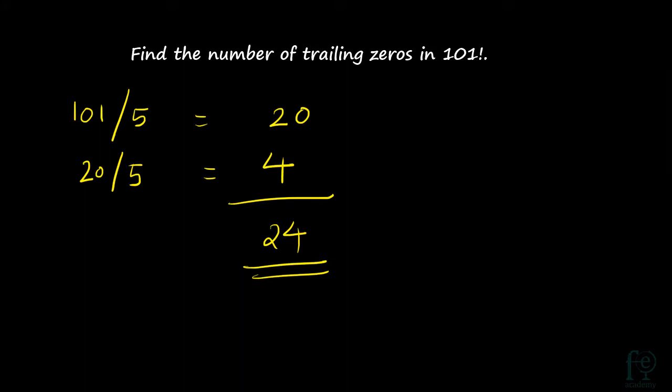It is very easy to find — you just have to understand how to do this. You just keep on dividing by 5. What you are trying to do is find out how many multiples of 5 are there in 101 factorial. So 101 divided by 5 means 20 numbers will be divisible by 5, and in that 20, again 4 numbers will be divisible by 5. So there will be 24 trailing zeros in 101 factorial.